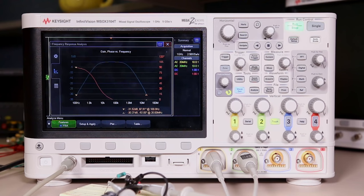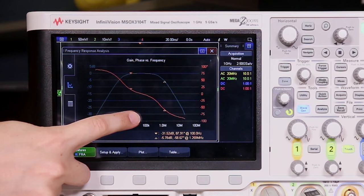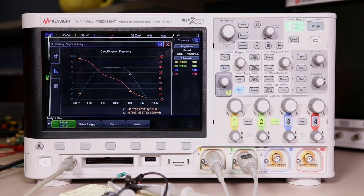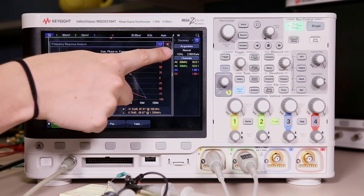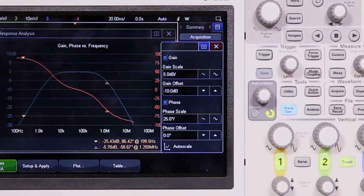And then once it's finished running you can use the touch screen to move around the orange triangular markers on the chart and you can see the data for these markers down here in the bottom right corner. So the scope will already auto scale the Bode plot when the test is complete but to control the scaling even further you can press this arrow in the top right corner of the plot to change the scaling and the offset of both the gain and the phase.